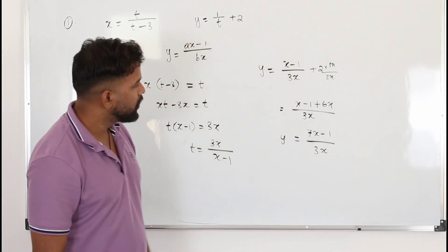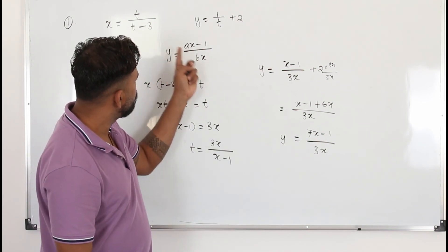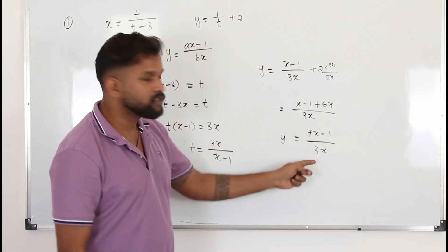That's the Cartesian equation, compared with the required form. We have a is 7, b is 3.